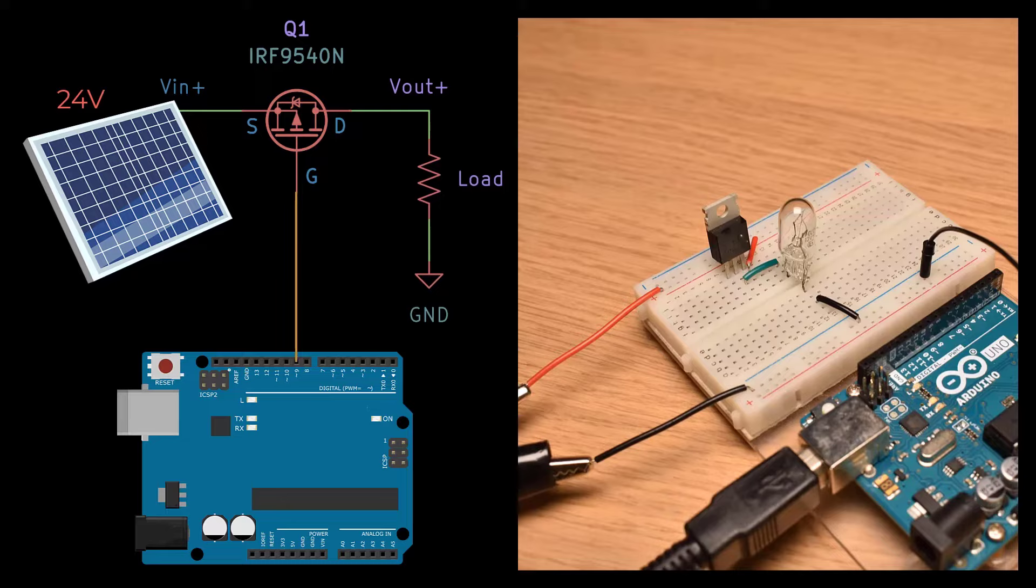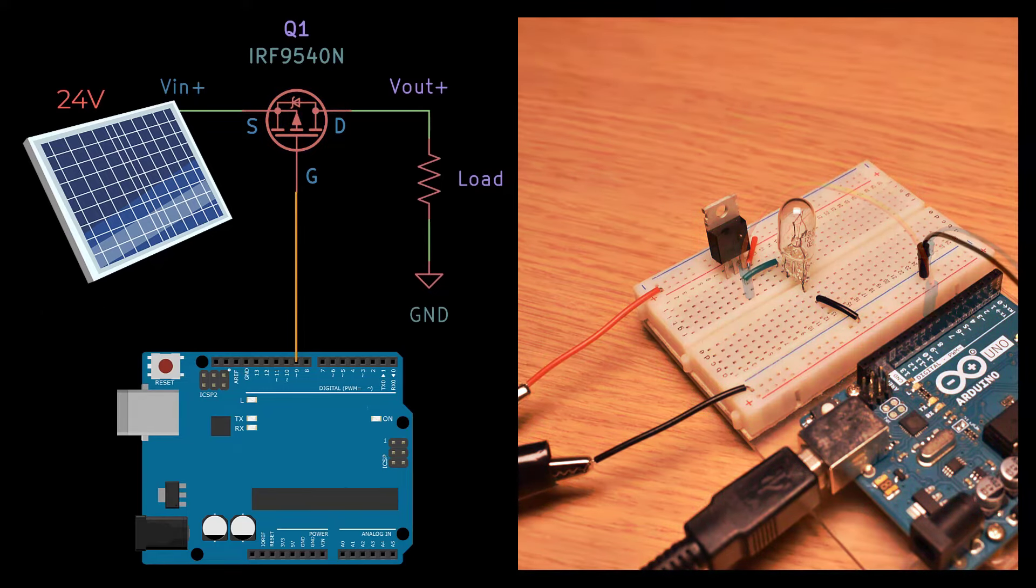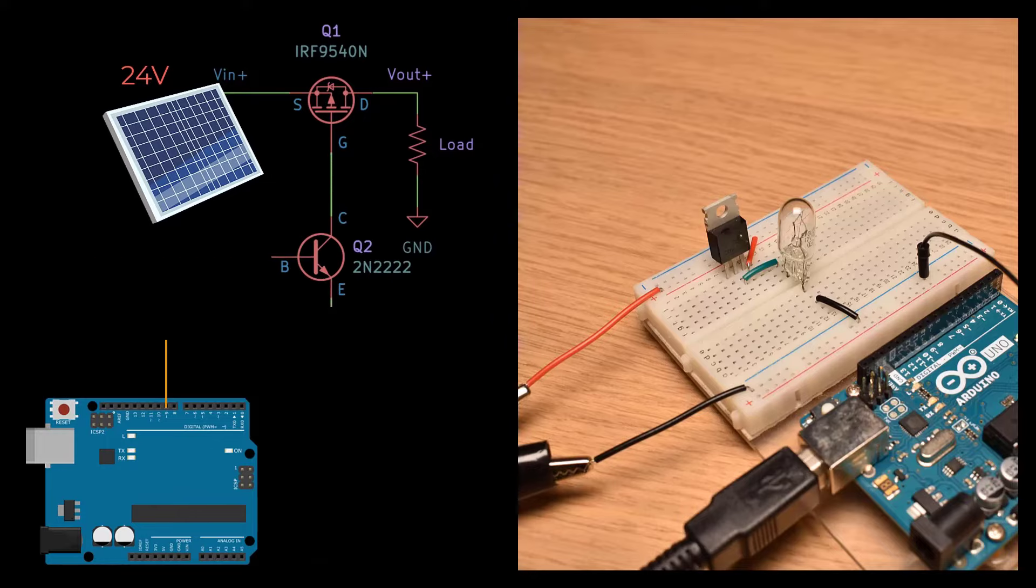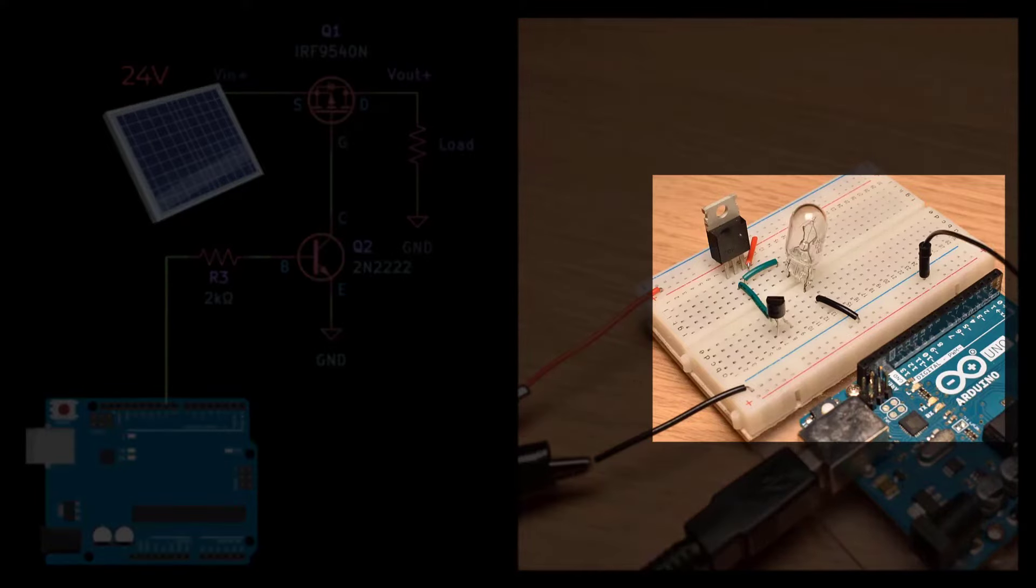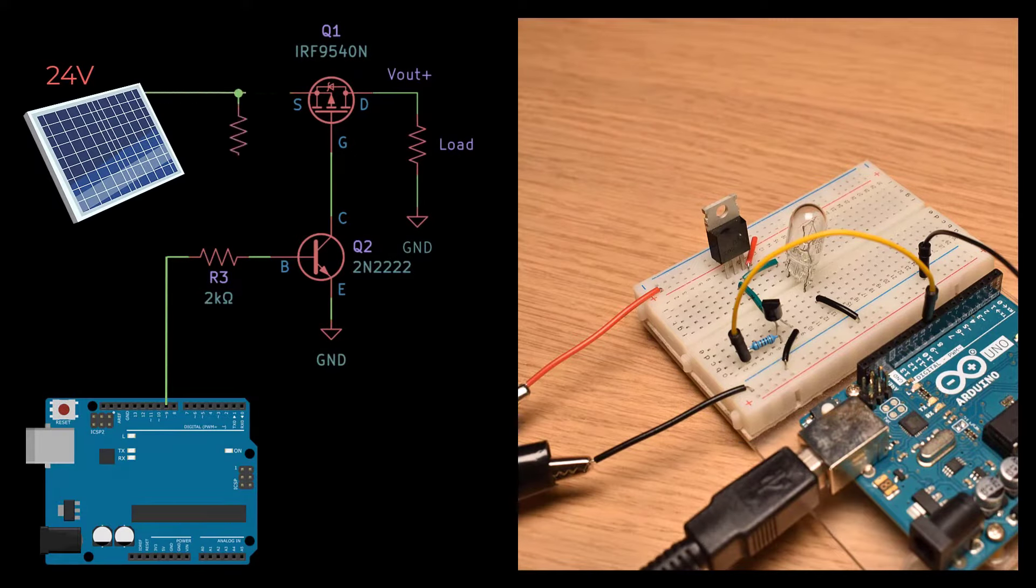If we write high to the pin, it will provide 5 volts, so the voltage difference will be negative 19 volts, so the MOSFET is still on. With this setup, we can't turn the MOSFET off, so it's useless. To fix this issue, we'll add an NPN transistor that can be controlled by the Arduino and use it to drive the MOSFET. Don't forget to add a current limiting resistor to protect the Arduino. To finish the driver circuit, we need a pull-up resistor so that the gate source potential difference is zero when the transistor is off.